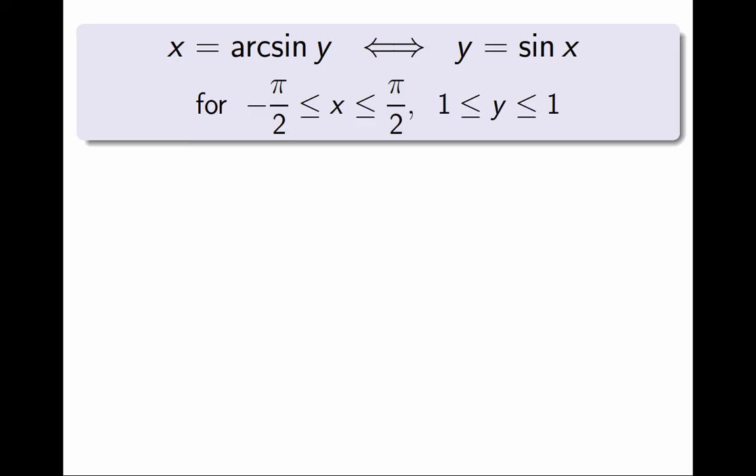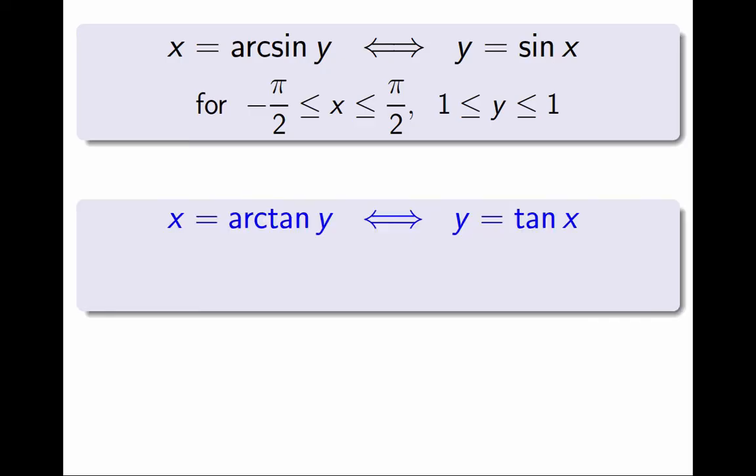We can write that x equals arctangent of y, if and only if, y equals tan x. But this time, the intervals are different. This equivalence is for all x between minus pi over 2 and pi over 2, not including the endpoints, and for all real numbers y.